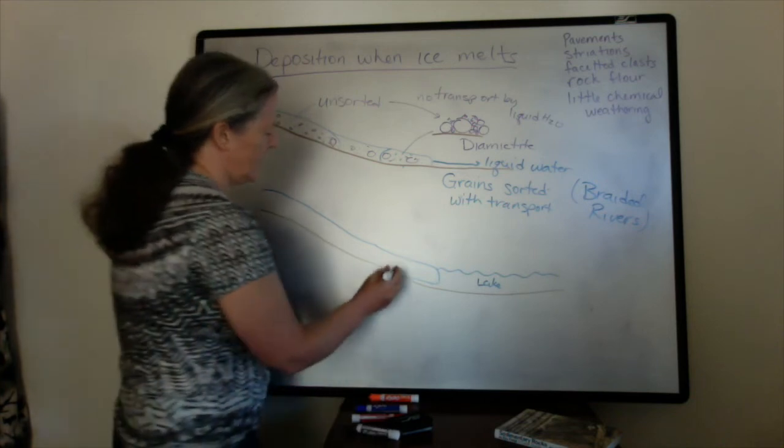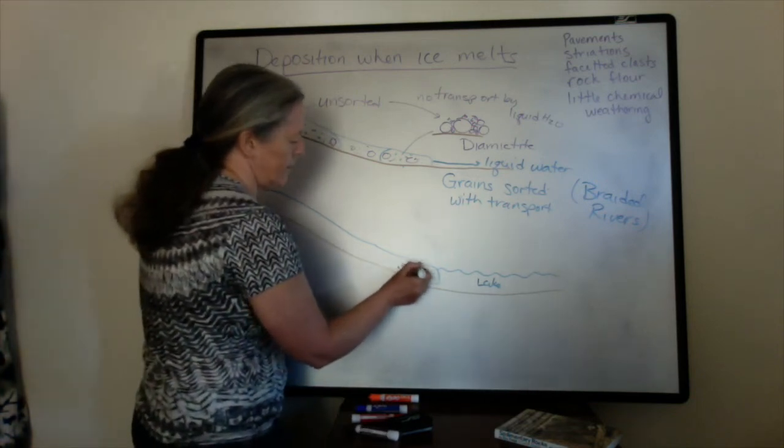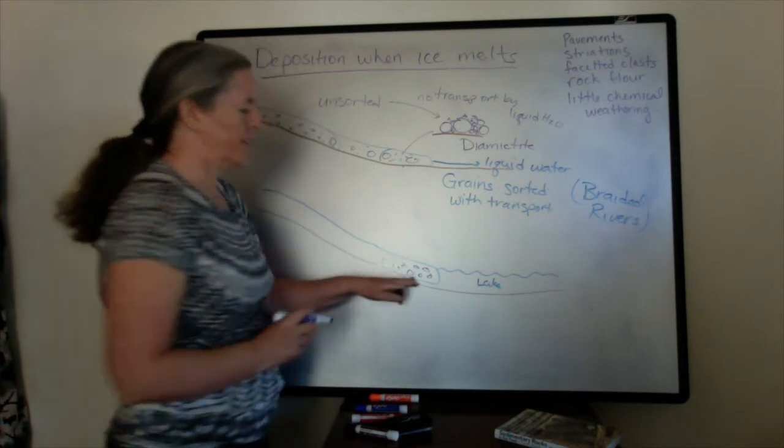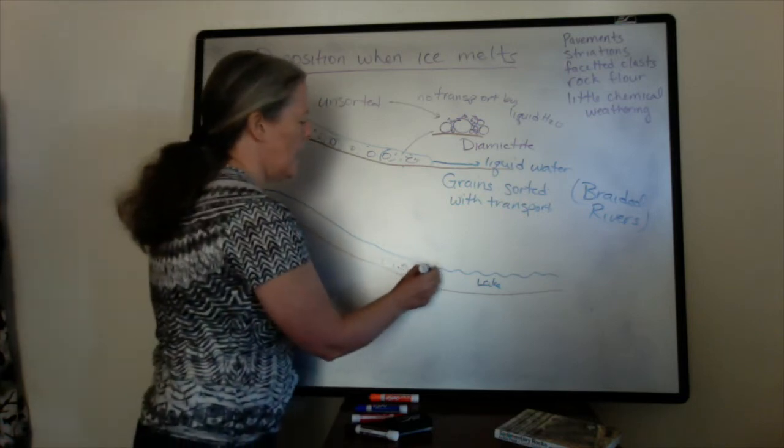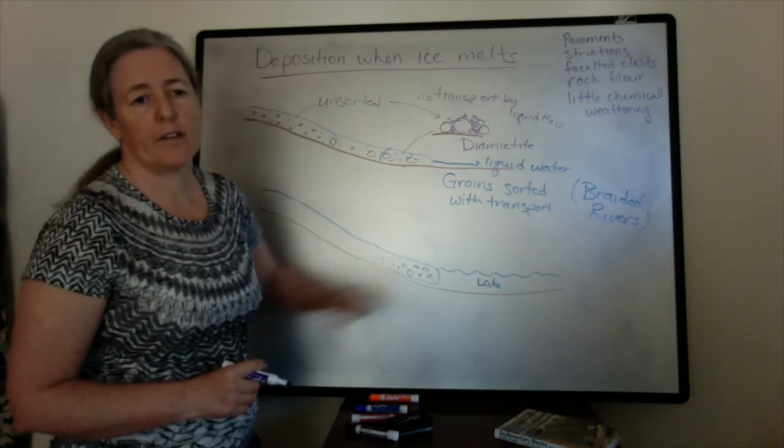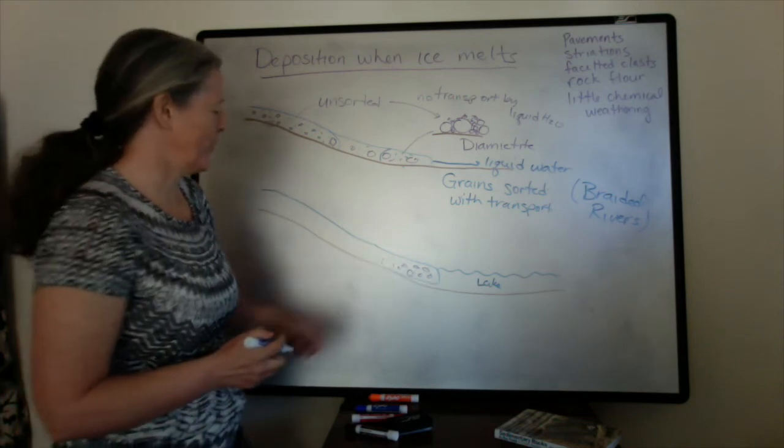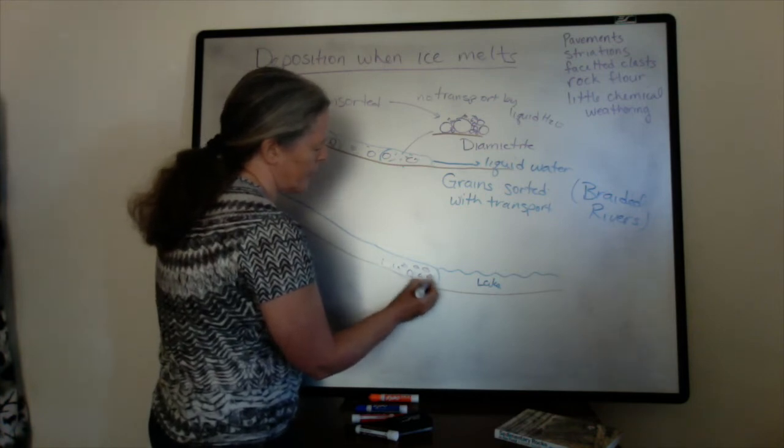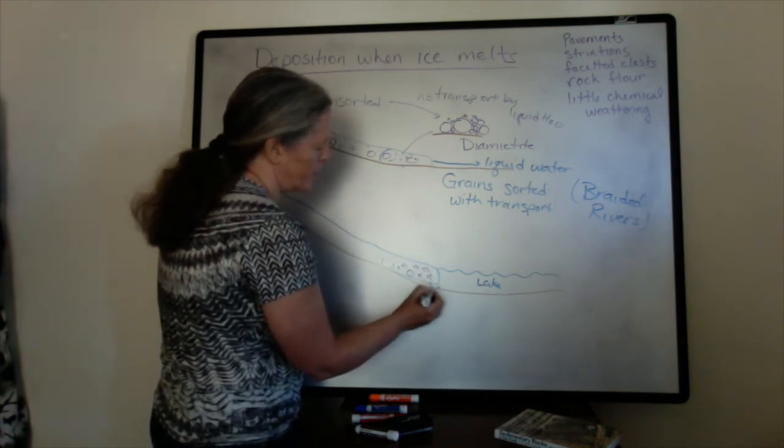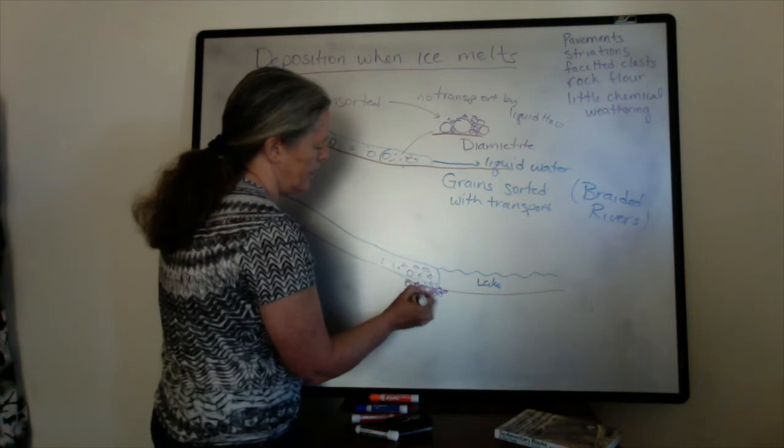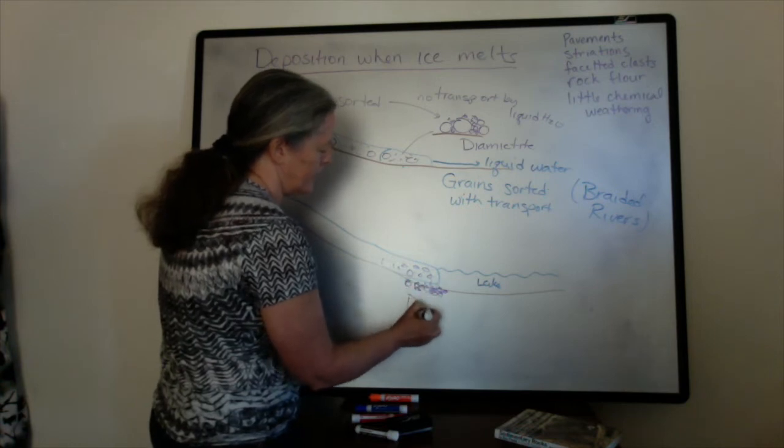In this particular case, if you have our glaciers here and all the sediment, one of the things that happens is that the lake water is always above freezing because it's liquid. And so often the sediment just drops as the ice melts, the sediment just drops to the bottom here. And you end up again with diamictite.